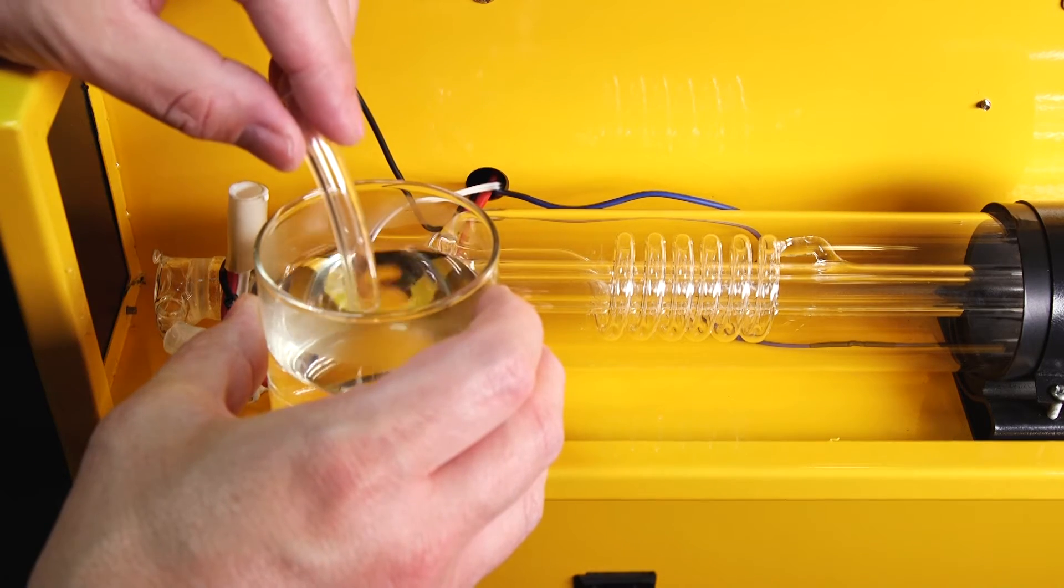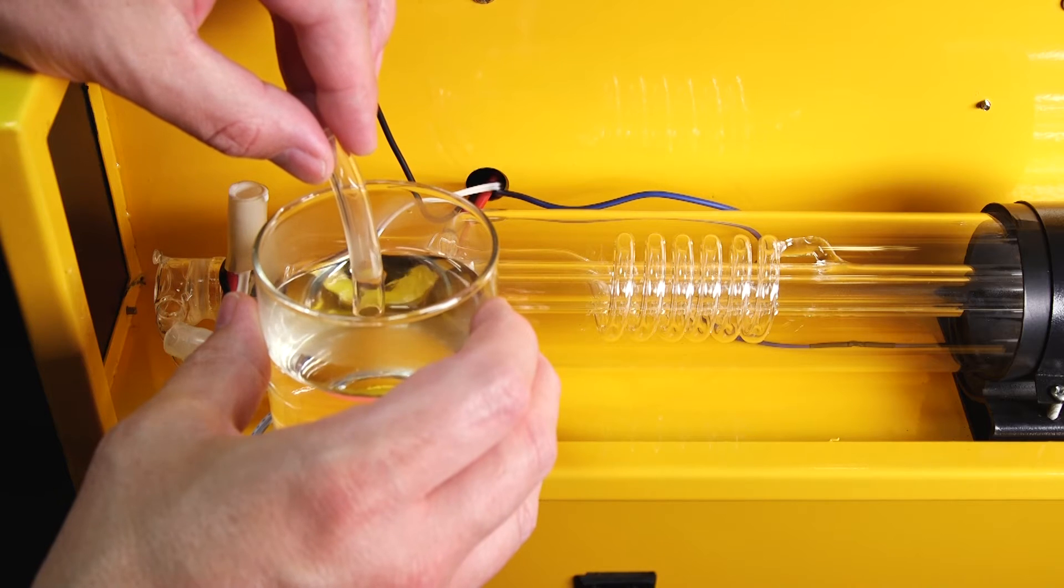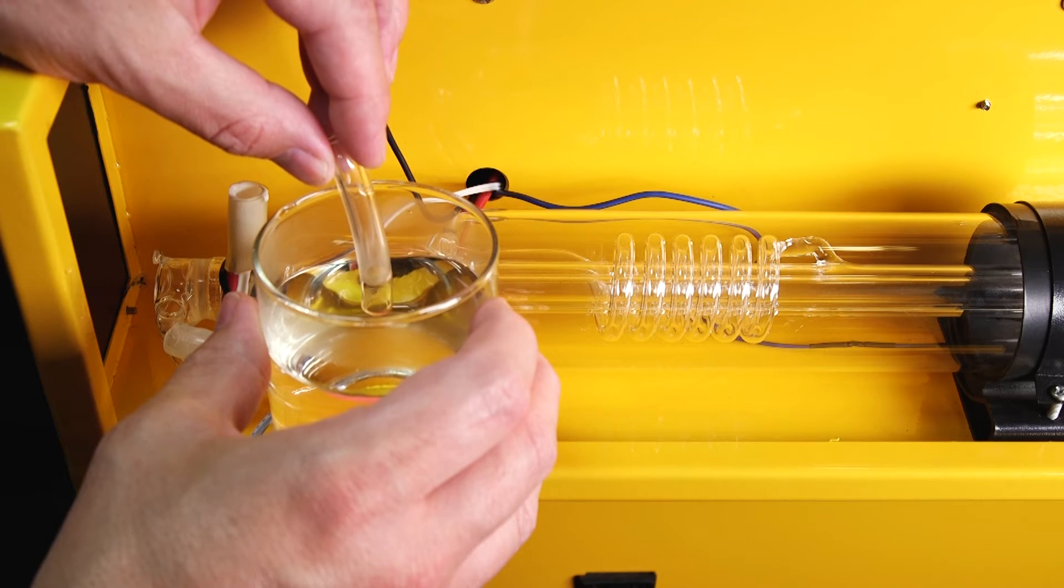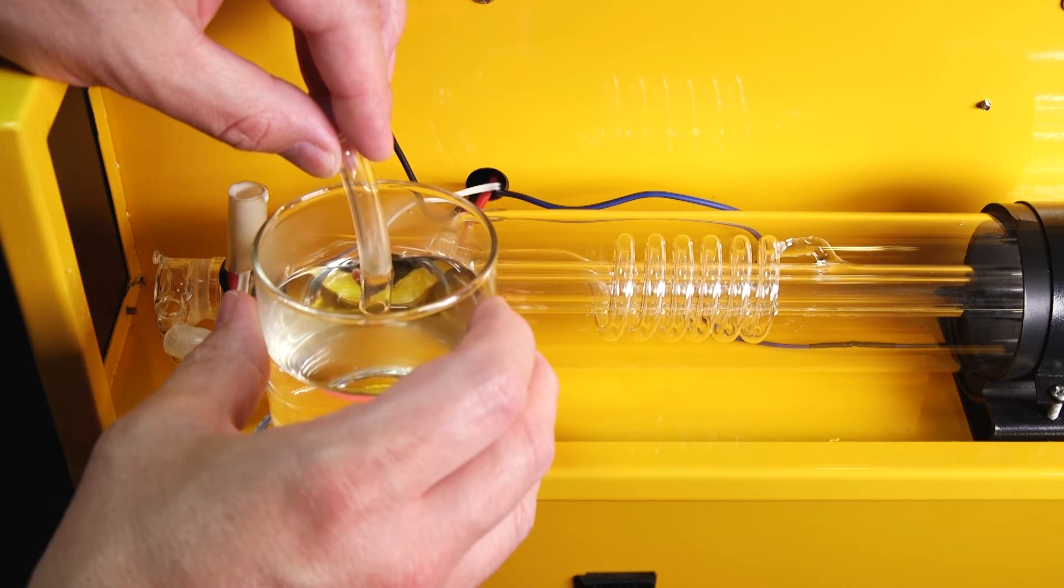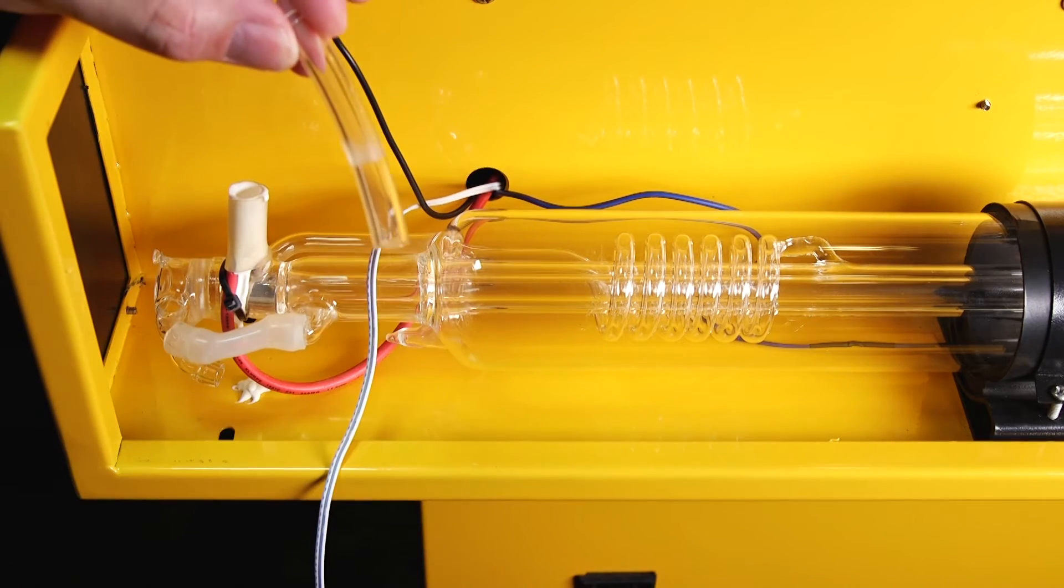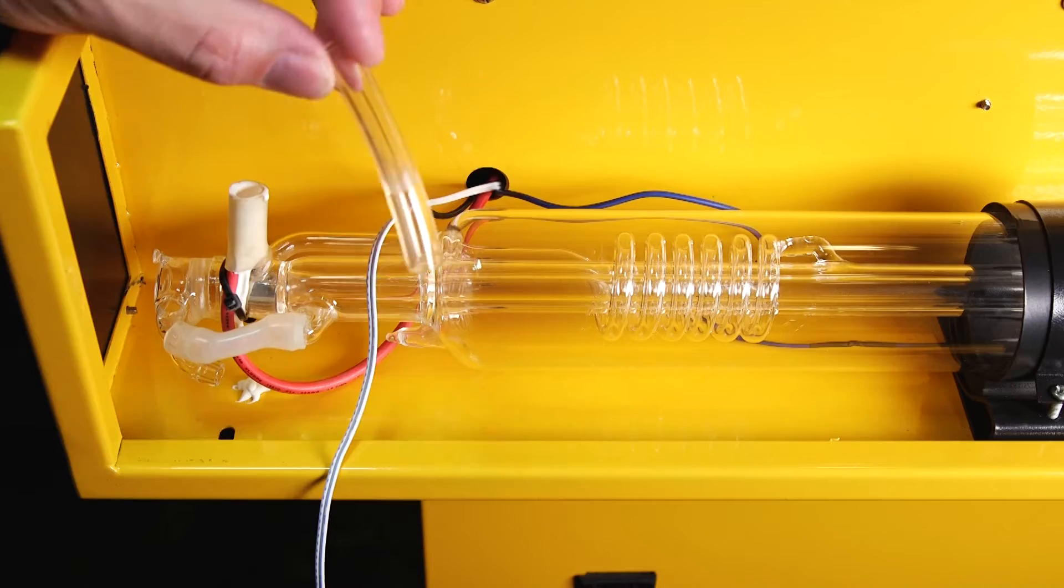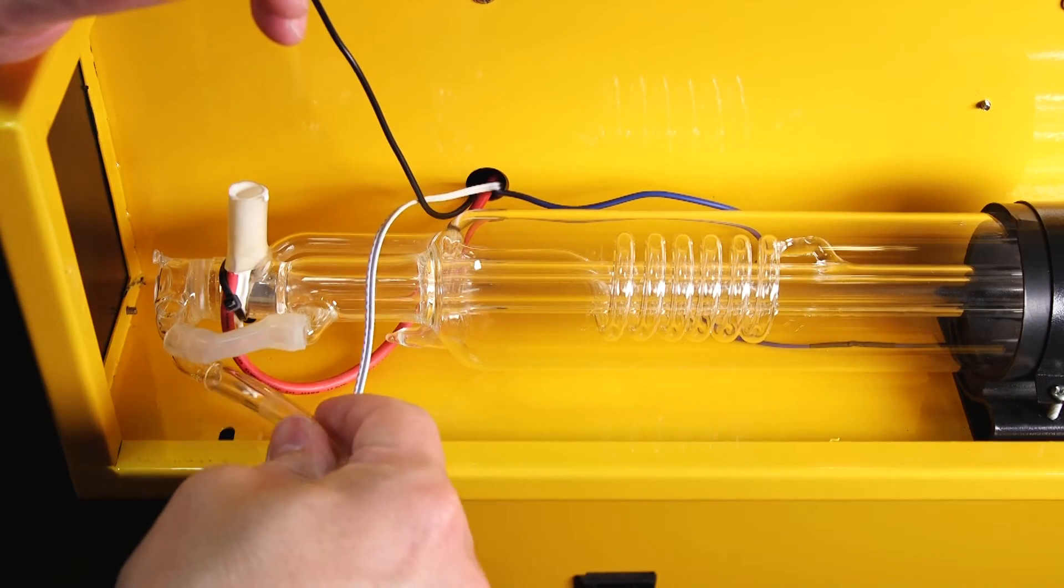To make your vinyl tubing go on easier you simply need a glass of hot water and just take the end of the vinyl tubing and let it sit in the hot water for a minute or two. After the hot water has warmed the tubing you'll find that it slips on much easier just like so.